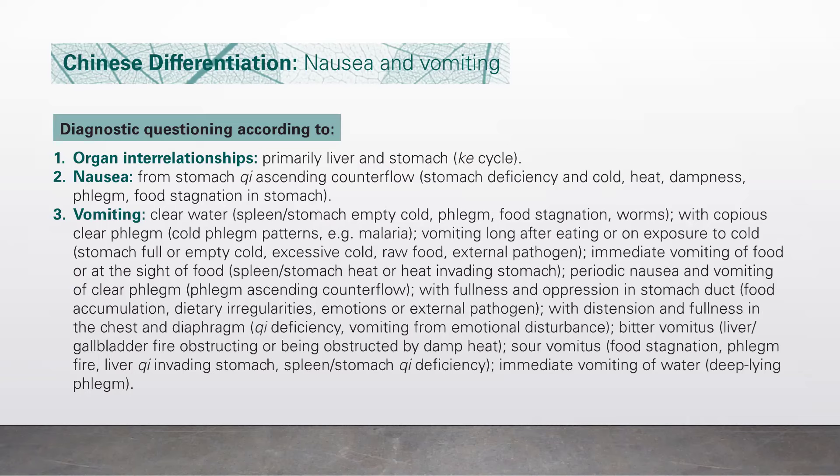Number three, vomiting: clear water — spleen, stomach, empty cold, phlegm, food stagnation, worms. With copious clear phlegm, there is cold phlegm pattern, for example malaria. Vomiting long after eating or exposure to cold indicates stomach full or empty cold, excessive cold, raw food, or external pathogen.